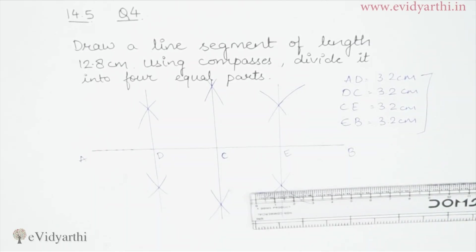We can see AB has been divided into 4 equal parts. This was question number 4 of Exercise 14.5.